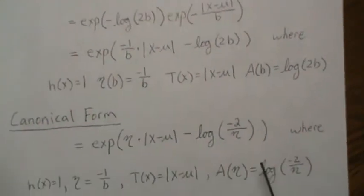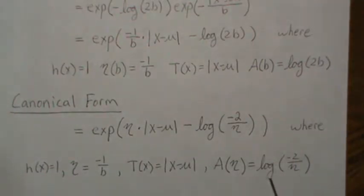So now that we have the log partition, we can take derivatives of it and find the mean and the variance of our sufficient statistic.